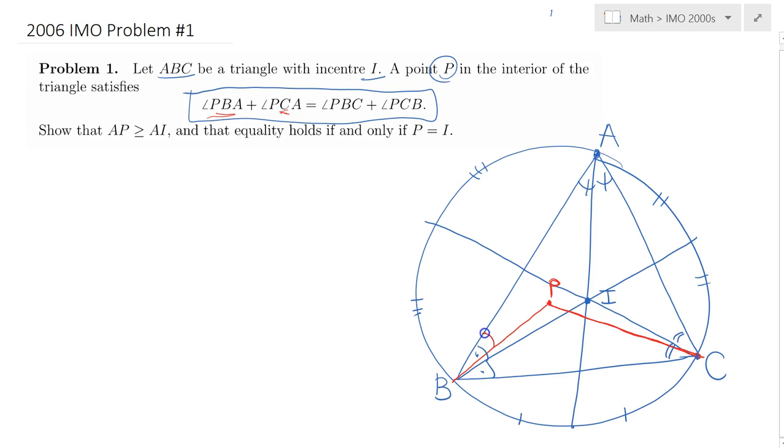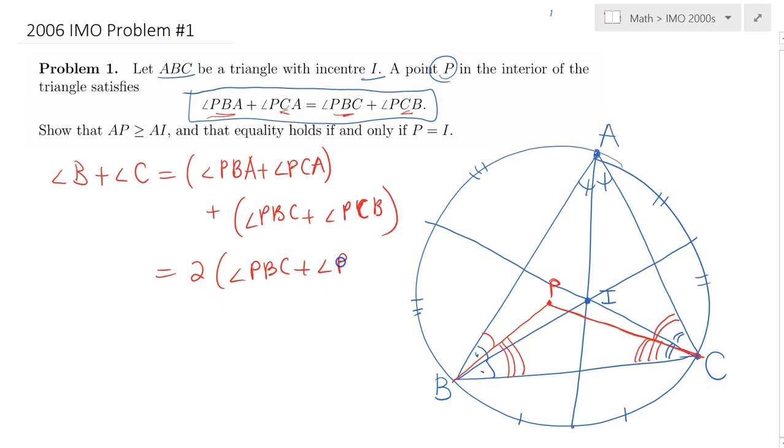We are talking about the angles B and C split by these lines PB and PC. Angle PBA plus PCA would be simply this angle and that one, and angle PBC and PCB would simply be this angle and that one. So all these red colored angles add up to angle B plus C, and I claim B plus C simply equals the sum of these two, the left hand and right hand side of the given equation, plus angle PBC plus angle PCB. As a result, that would simply be two times angle PBC plus angle PCB.